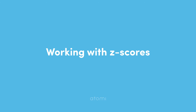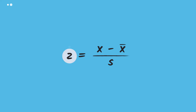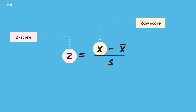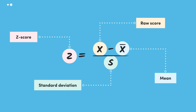Now that we have all the theory out of the way, let's actually start calculating Z-scores. The formula used to calculate Z-scores is: Z equals X minus X-bar, all divided by S. Here, X is the raw score which we're trying to standardize, X-bar is the mean of the dataset, and S is the standard deviation of the dataset. So to calculate a Z-score, we subtract the mean from the raw score and then divide by the standard deviation. The top of the fraction gives us distance from the mean, and dividing by the standard deviation gives us this distance in terms of standard deviations.